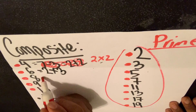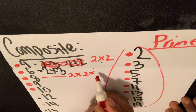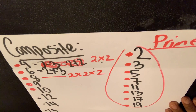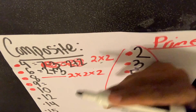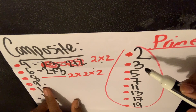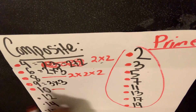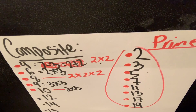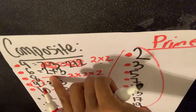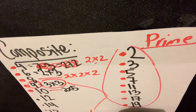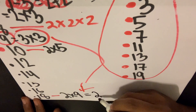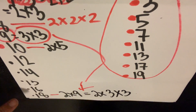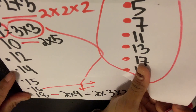What about eight? Two times two times two. And nine? Can I use the same number twice? Yes, that's allowed. So nine is three times three. Ten is two times five. And eighteen? Two times nine — but nine can be broken down further: nine is three times three, so eighteen is two times three times three.